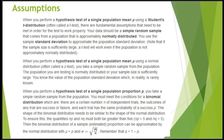Next we have assumptions. When you perform a hypothesis test of a single population mean mu using a Student's t-distribution — also called a t-test — there are fundamental assumptions that must be met. Your data should be a simple random sample from a population that is approximately normally distributed. We use the sample standard deviation to approximate the population standard deviation. Importantly, if the sample size is large enough, a t-test will work even if the population is not normally distributed.